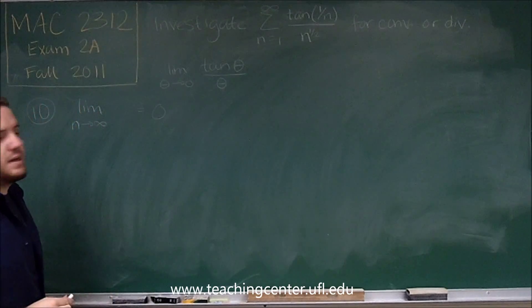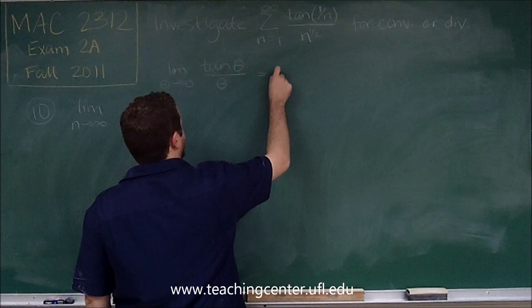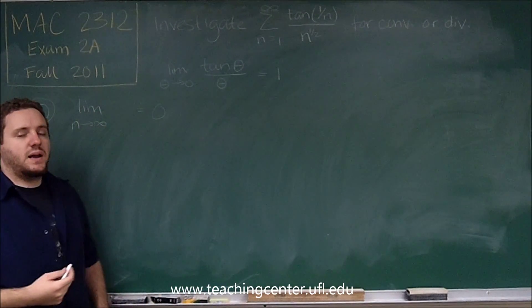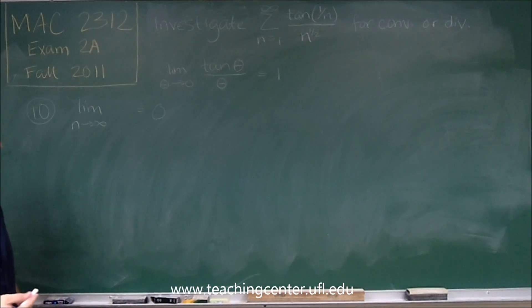We have the limit as theta approaches 0, tangent theta over theta. This is equal to 1. And this is going to help us decide what we're going to choose for our comparison.